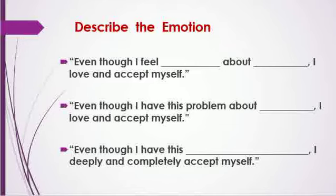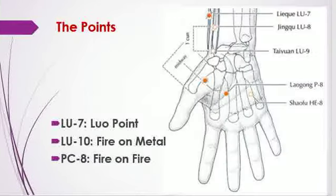Say the statement, write it out, and say it a few times. Then we're going to use some tuning forks and oils on three points. Here are the points — I'll go over them first. They are Lung 7, Lung 10, and Pericardium 8, and you can see they're on the wrist and onto the hand.